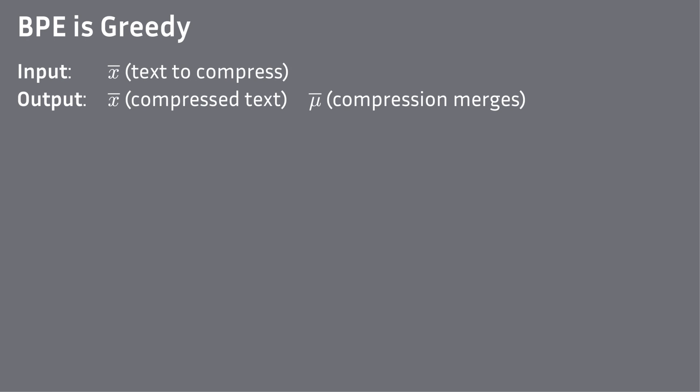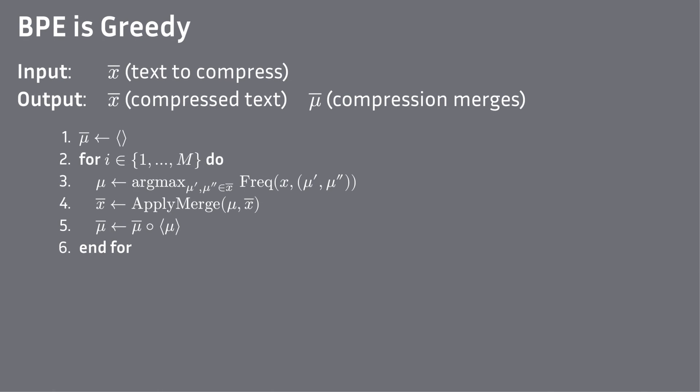As the output, we want the compressed text, but also the sequence of merges, so that we can apply it to new data as well. Then, as expected, we iterate N times, finding the most frequent pair, merging it, and looping again.